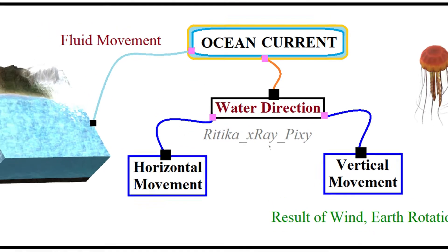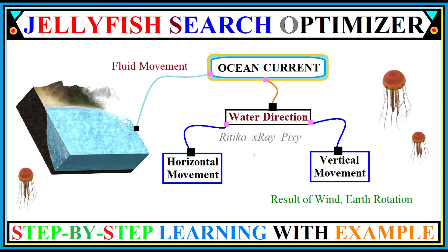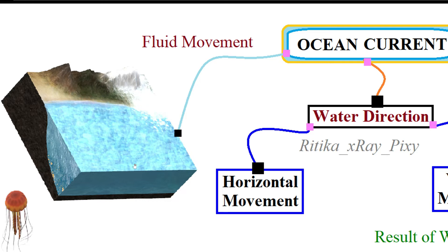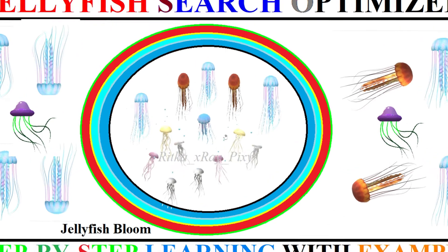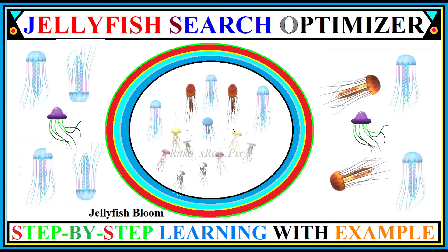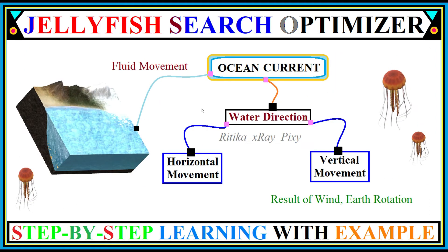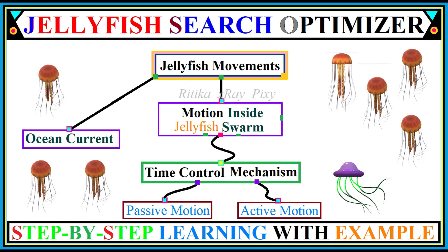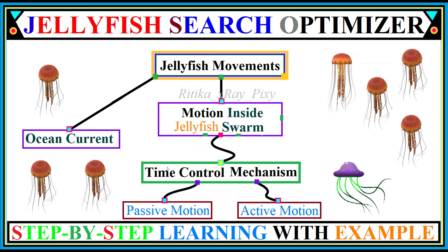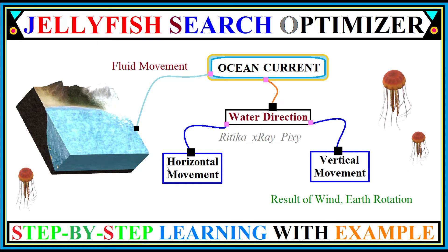Jellyfish can sense the ocean current and actively swim against it. Jellyfish swarm formation is driven by ocean current, nutrients, temperature, or predators — among all, ocean current is considered the most important factor. Jellyfish either follow the ocean current or move inside the swarm, and inside the swarm a time control mechanism is used to update their position. Ocean current is fluid movement with horizontal and vertical directions; vertical movement results from wind and Earth's rotation.